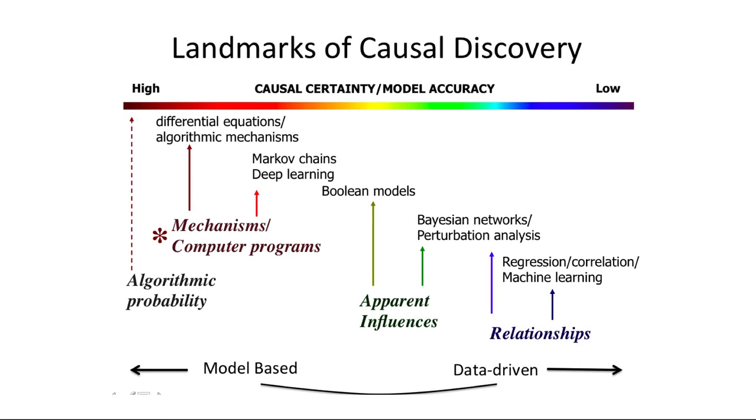What we aim is to go all the way and start from the opposite end of the spectrum in the landmarks of causal discovery diagram, at the most model-driven end, and from there move to the data-driven side when necessary, in a feedback loop, so that a model is generated and improved based on the data observed.